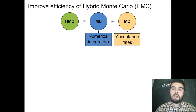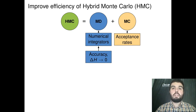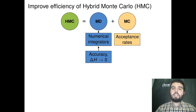Here we have worked at two levels, which are the numerical integrators and the acceptance rates. We have worked in the improvement of accuracy of integrators, leading to a better conservation of the Hamiltonian, or a better conservation of the energy. This also helps in an improvement of the acceptance rate.